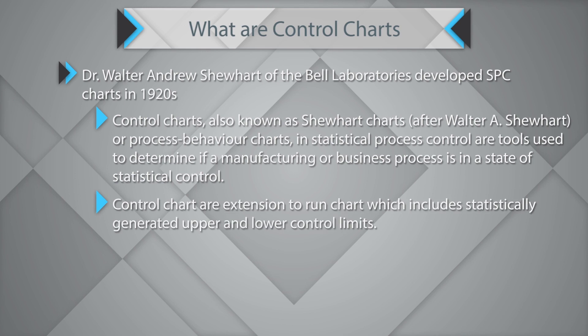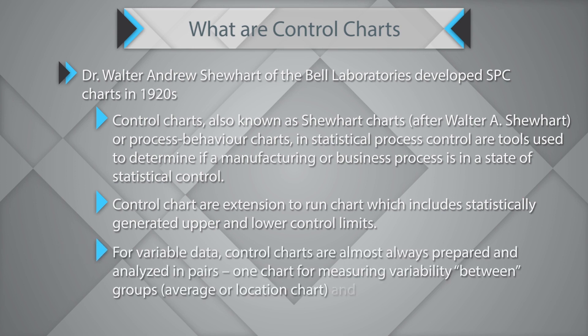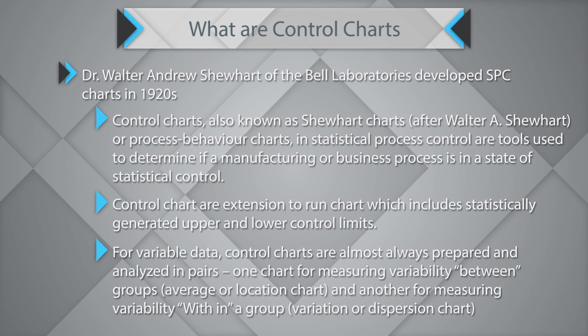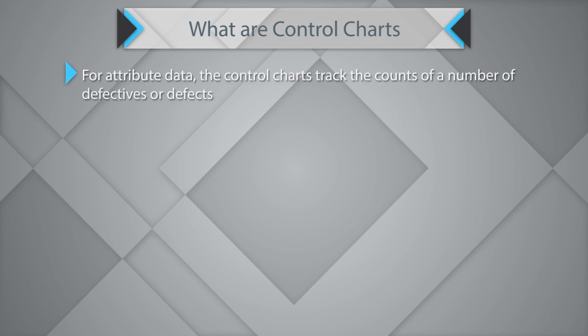Control charts are extensions of run charts which include statistically generated upper and lower control limits. For variable charts, control charts are almost always prepared and analyzed in pairs — one chart for measuring variability between the groups and another for measuring variability within the groups. For attribute data, the control charts track the count or number of defectives or defects.